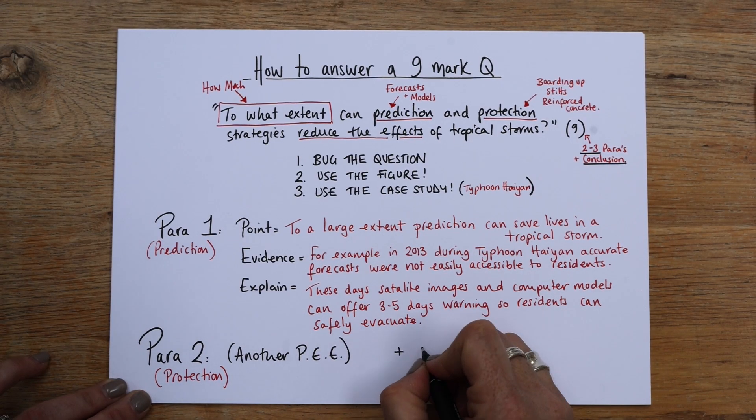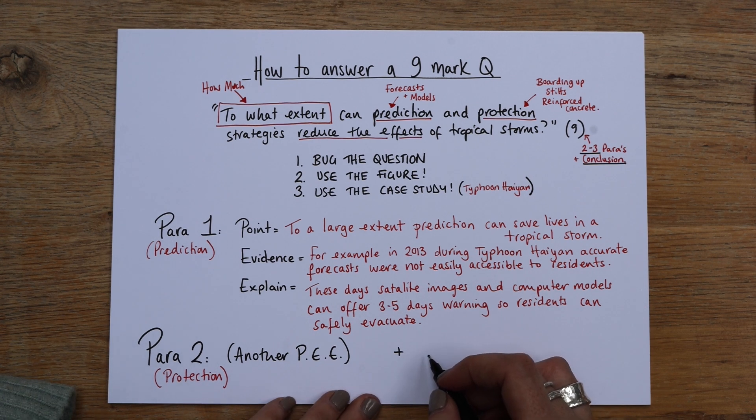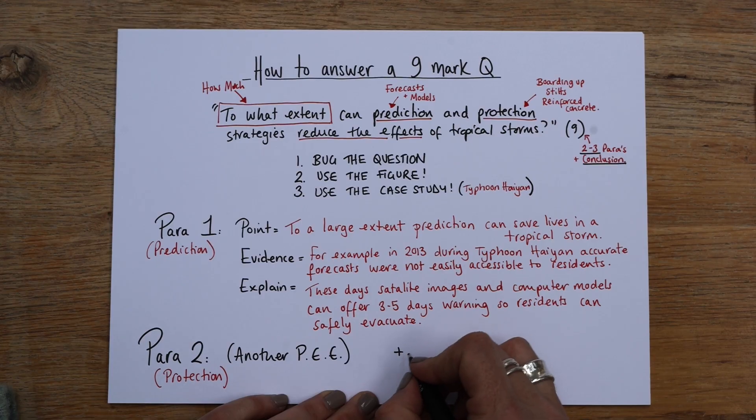And if you can bring that, bring in Typhoon Haiyan again, or you might bring in a high income country like the USA and Hurricane Sandy, where they had a great deal of protective measures in place there that reduced the damage. And then don't forget at the end,